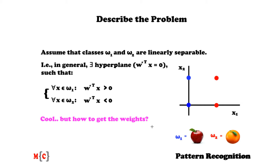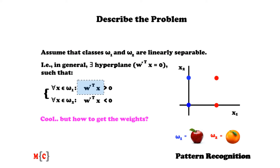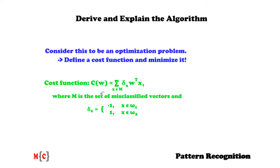Keeping this in mind, we will now derive the algorithm and I'll explain how it works. What we can do is consider this to be an optimization problem. In other words, we have to define some cost function and simply minimize it. Using the resulting weights, we will have a linear classifier. We can look at what happens when objects get misclassified. This product of multiplying w transpose by x will be negative if an omega1 object is misclassified to be omega2. Similarly, this product will be positive if an omega2 object is classified to be omega1. We can consider these values to be costs and simply sum them.